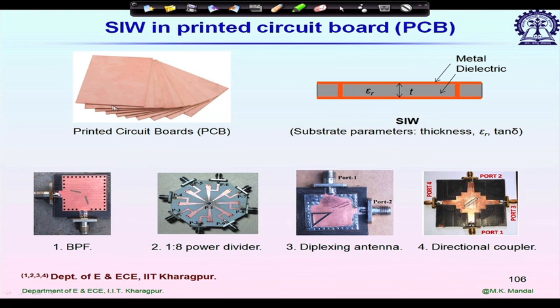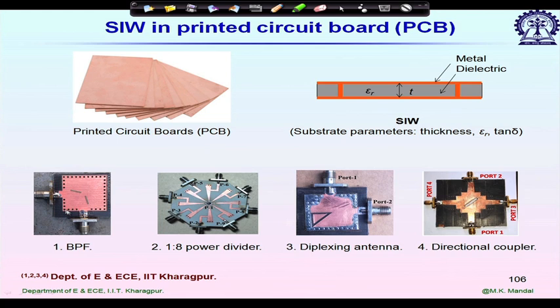We start from a PCB with several laminates. The top and bottom metals are already present; we only need to add the periodic vias. Some components realized in SIW technology — all designed and fabricated at IIT Kharagpur — include a band pass filter with SMA connectors operating up to 18 GHz. Although not in the millimeter wave range, similar designs can be made at millimeter wave frequencies. You can identify the vias forming the cavity sidewalls, shown in copper, with dielectric in black.